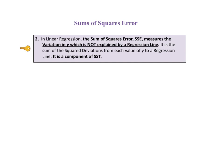In linear regression, the sum of squares error, SSE, measures the variation in the variable Y, which is not explained by a regression line. It is the sum of the square deviations from each value of Y to a regression line. SSE is a component of SST. When all we have is a single variable Y, then all we have is a one-dimensional y-axis only graph, like that shown in the previous slides. And that is the end of the story.